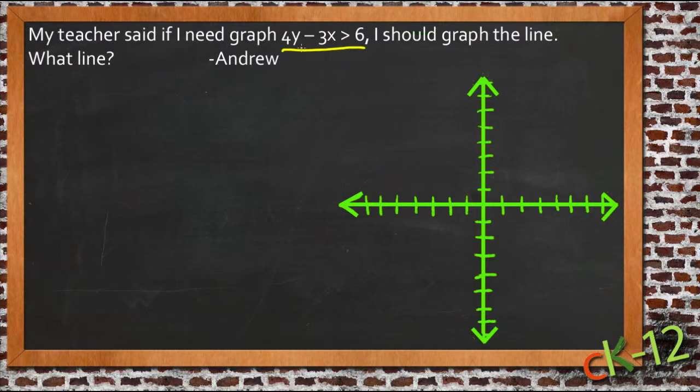If we graph the line 4y minus 3x equals 6, then we can use that information to graph this inequality much more easily. So that's the line that your teacher was talking about. So let's take a look at what we mean by that.